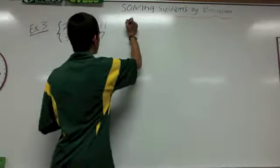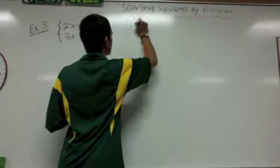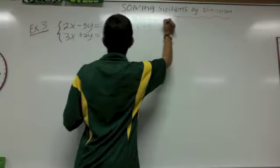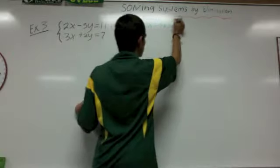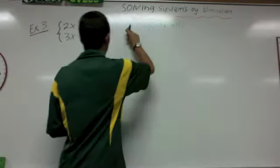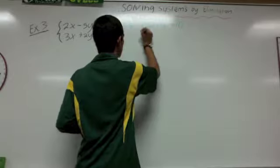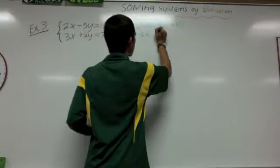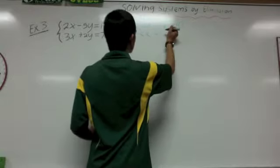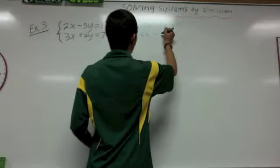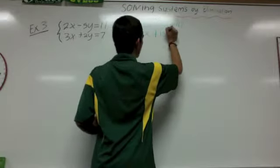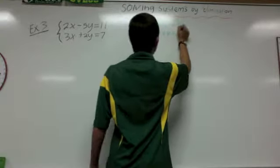We're going to do negative 3 times 2x minus 5y equals 11, multiplying everything by negative 3. So it's going to give you negative 6x plus 15y equals negative 33.